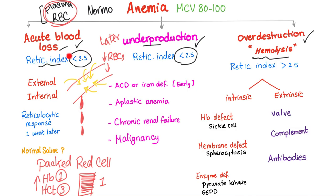Reticulocytes are initially low. The bone marrow starts to realize it needs to produce more, so it produces more reticulocytes — but this takes around five to seven days. In the beginning, the reticulocyte index is less than 2.5.